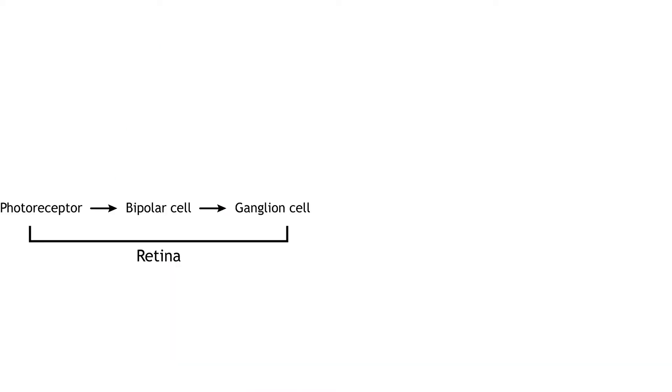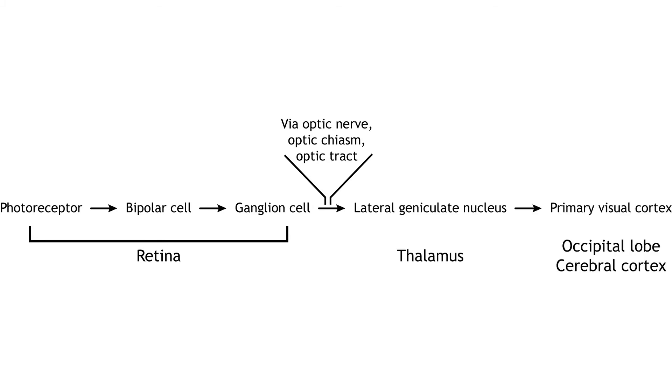Visual information that is sent through the full visual pathway moves from the photoreceptor to bipolar cell to ganglion cell in the retina. It leaves the retina via the optic nerve, optic chiasm, and optic tract to the lateral geniculate nucleus of the thalamus, and then travels to the primary visual cortex.